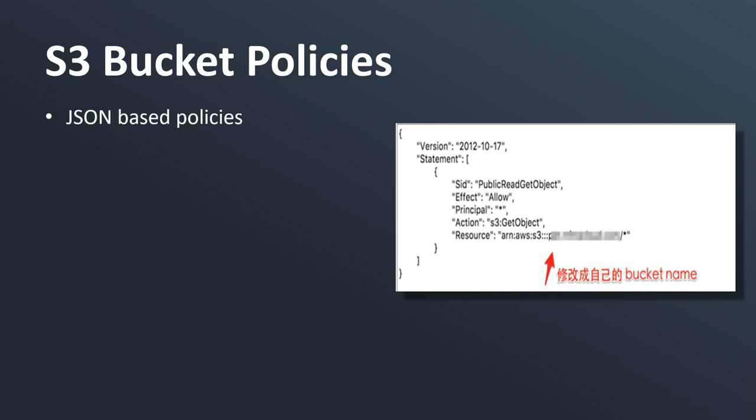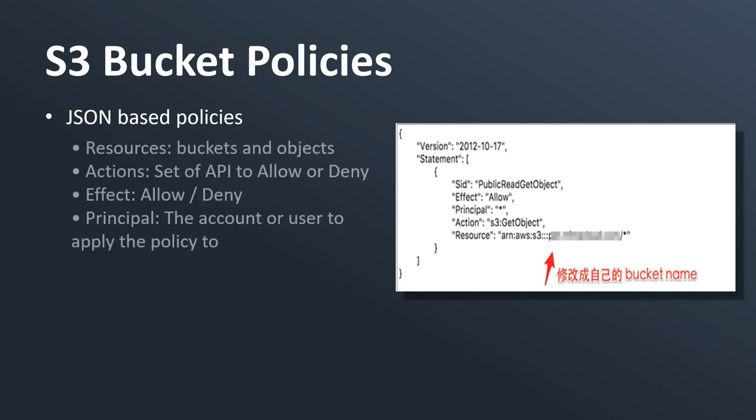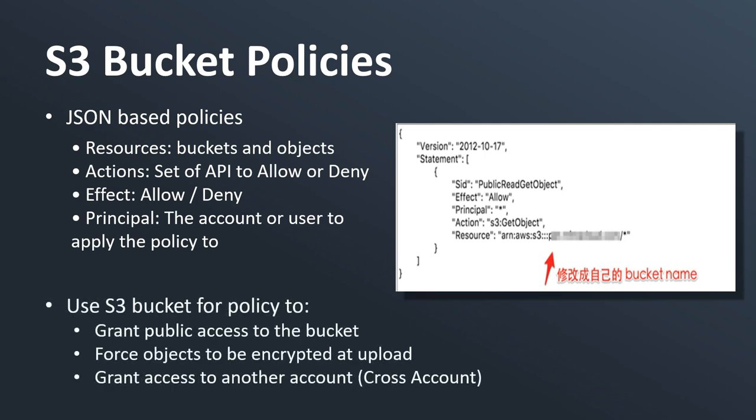This allows public access to our S3 bucket. Bucket policies can be applied to both buckets and objects. The action defines a set of APIs to allow or deny, the effect is Allow or Deny, and the principal is the account or user the policy applies to. Common use cases include granting public access to a bucket, forcing objects to be encrypted at upload time, or granting cross-account access.